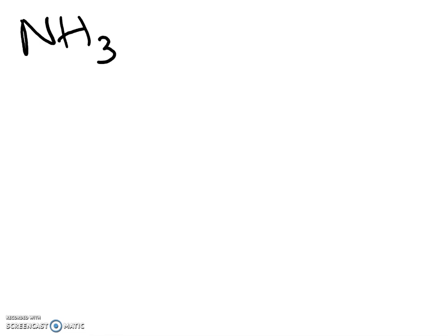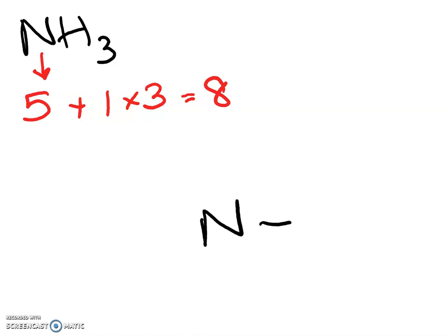Another example is ammonia, NH₃. The nitrogen has seven electrons in total — two electrons in the first shell and five in the second shell. Hydrogen has one electron in its outer shell, but there are three hydrogen atoms. So there are a total of eight valence electrons in this molecule. I'm going to draw this out with the nitrogen in the middle attached to the three hydrogens. Each of those bonds contains a pair of electrons, so there are six electrons shown right now.